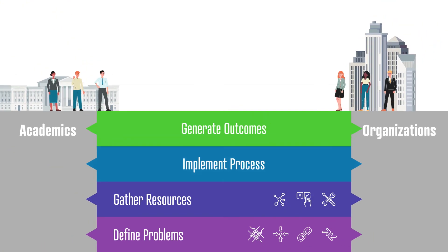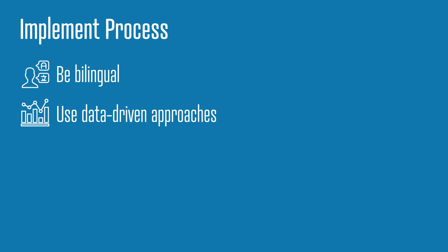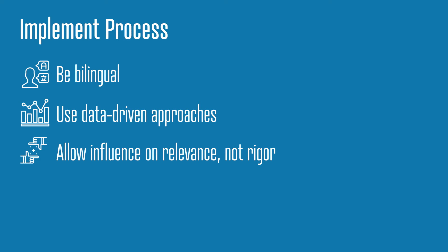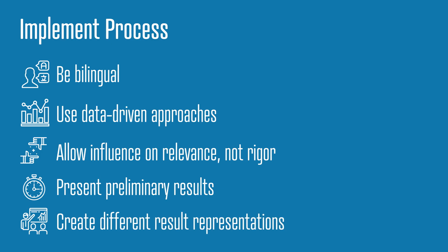To implement a successful research process, academics should be bilingual — speak both the academic and the managerial languages. Use inductive, data-driven, and pre-theoretical approaches, together with deductive, hypothesis-based approaches. Don't think in relevant versus rigor. Allow managerial influence on the relevance of your questions, but not on the rigor of the approach. Present preliminary or descriptive results shortly after data collection to keep managers engaged. And create different result presentations for the managerial versus the academic audience.